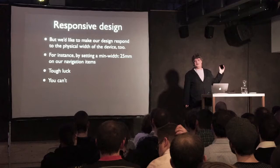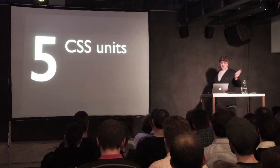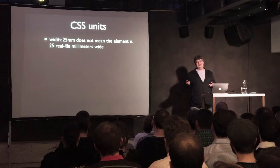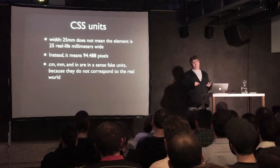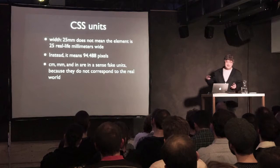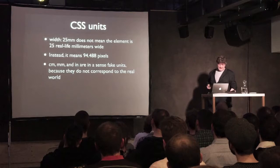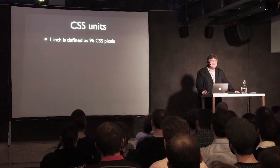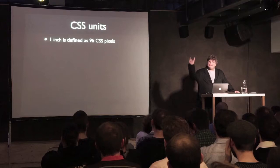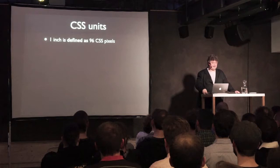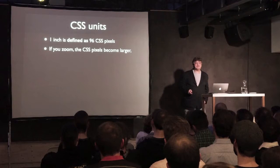I'm here to tell you that you can't. There is absolutely no way in CSS or JavaScript to find out anything about the physical dimensions of your device. To understand why, we have to briefly talk about CSS units. Writing 'width: 25mm' does not mean 25 millimeters — it means 94.488 pixels. Because centimeters, millimeters, and inches are fake units that do not correspond to anything in the real world. In CSS, one inch is defined as 96 pixels — if you don't believe me, create a div with width 96px and another with width 1in, and they'll be exactly equal.